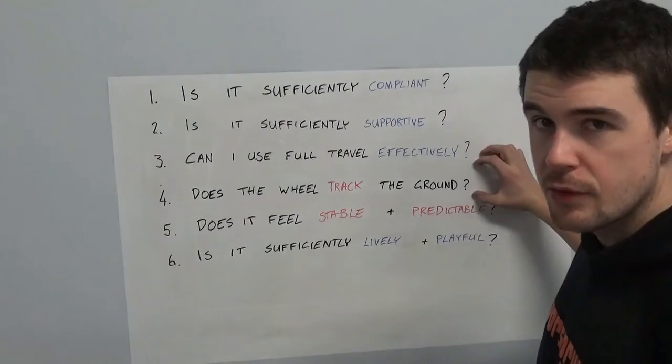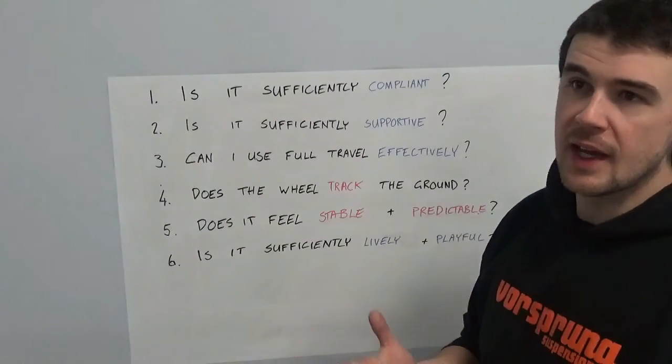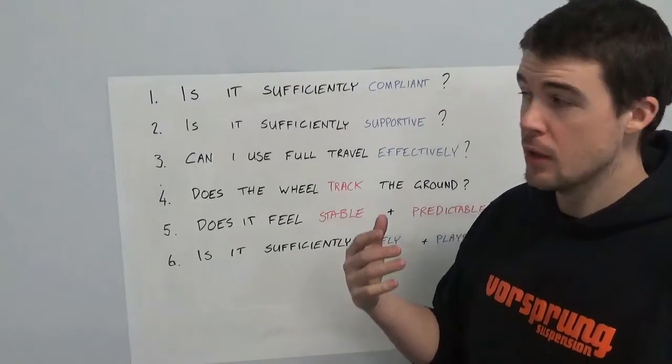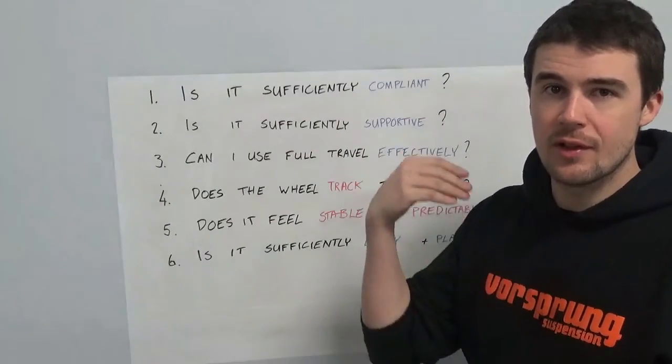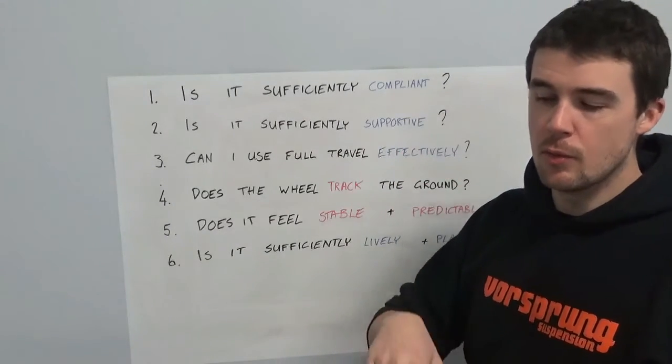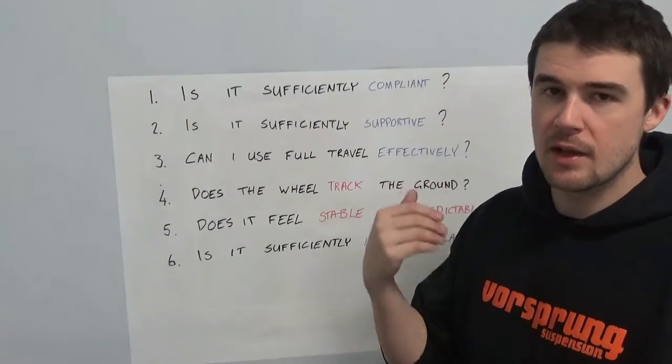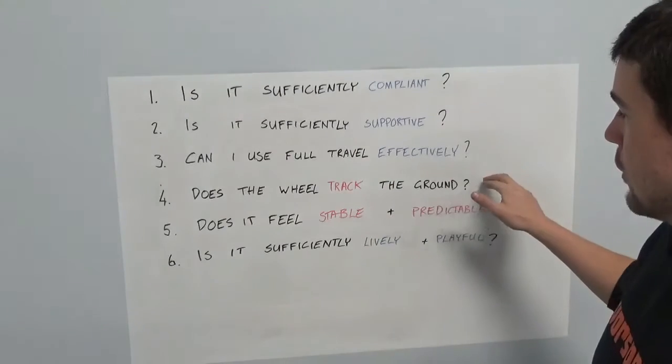Fourth question, does the wheel track the ground well? Is it following the ground, is my wheel doing what it can to follow the terrain and give me grip? And also, funnily enough, increase compliance. The more the wheel stays on the ground, the less impacts you have. So the more that it's able to basically roll over obstacles rather than bounce into them, obviously the less harshness you get, the better the compliance. So that one is pretty important.